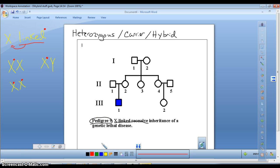Now, let's look at this pedigree. Here you have a pedigree that looks at an X-linked recessive trait for a lethal disease. This is to get your attention, because it's lethal.